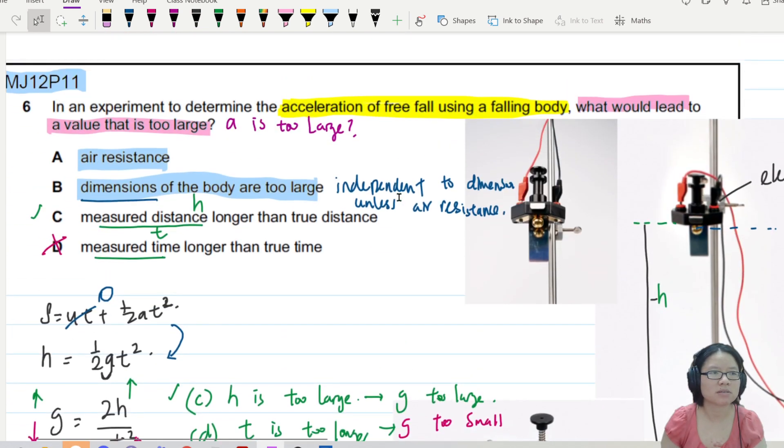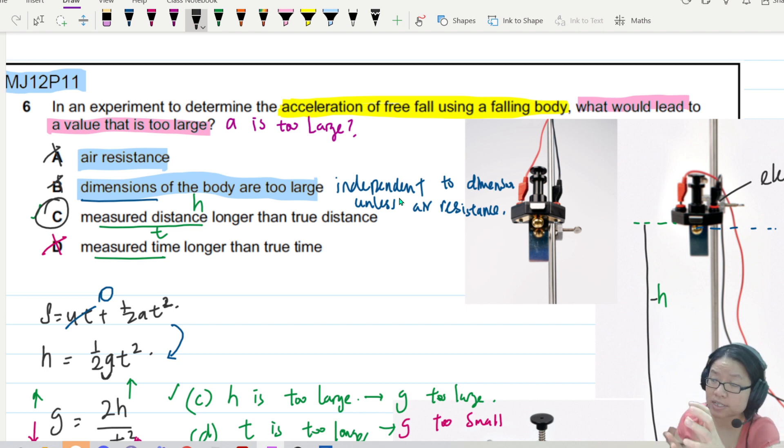So both of these will cause smaller A. So this means this option is wrong. This option is wrong. Because these two will cause a smaller A. Your answer is C. So understand the effect of air resistance. It will decrease the acceleration when the ball is falling down. Ball fall down, air resistance is trying to oppose the motion. So the ball's velocity will not increase as fast.